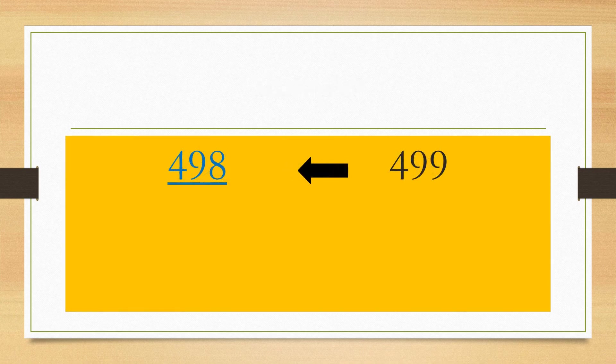Let us see one more example. Here, we have to count backward and the very first number we get is 498. So the number before 499 is 498.